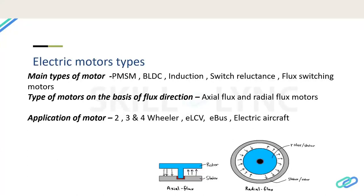First, we'll discuss the types of electrical motors used in the EV industry. There are classifications based on flux type. The main motors used in electric vehicle industries are PMSM, BLDC, induction, switched reluctance, and flux switching motors. PMSM and BLDC motors are almost similar — the differences are in the winding and waveform — but PMSM motors are a bit costlier than BLDC motors.